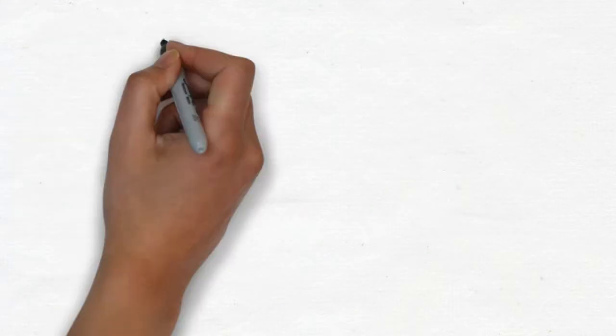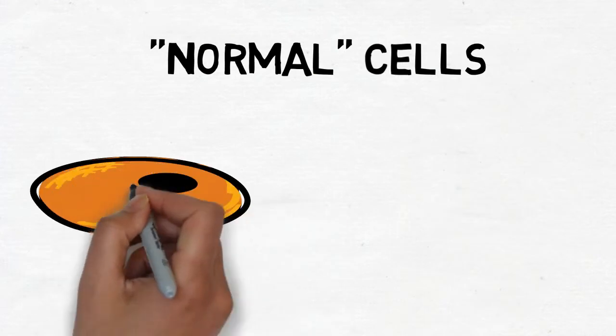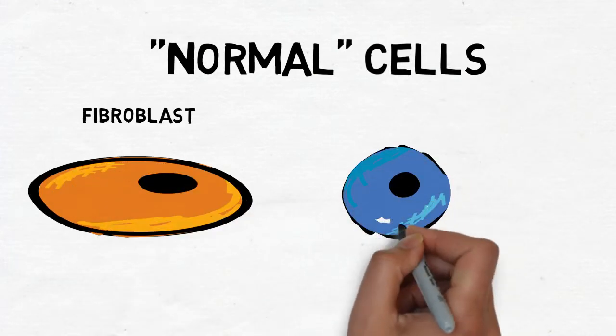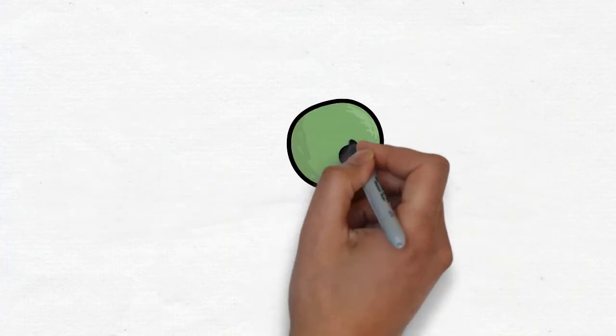However, human tumors don't comprise just cancer cells. Tumors contain normal cells, including fibroblasts and various immune cells. Together, these cells form the tumor microenvironment.